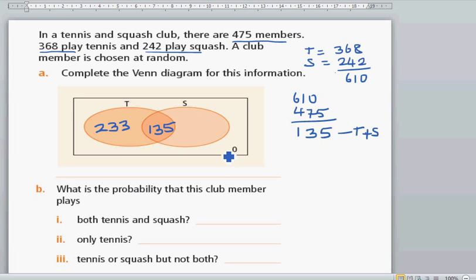And the people who play only squash would be 242 minus 135, which is 107. Okay, so there are none who do not play tennis or squash.